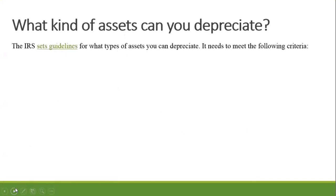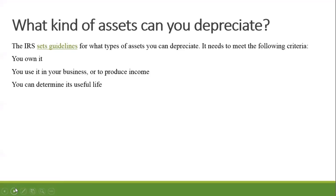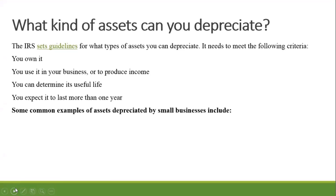The IRS sets guidelines for what types of assets can be depreciated. It needs to meet the following criteria: you own it, you use it in your business or to produce income, you can determine its useful life, and you expect it to last more than one year. Common examples of assets depreciated by small businesses include vehicles, real estate, equipment, office furniture, and computers.